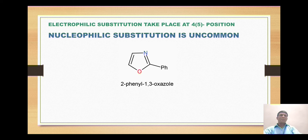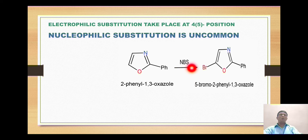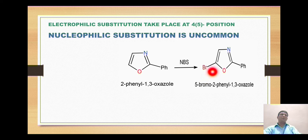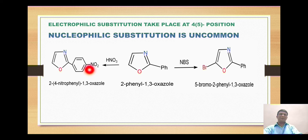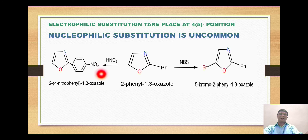When the oxazole derivative 2-phenyl oxazole is reacted with N-bromosuccinimide, bromination takes place. The bromine from N-bromosuccinimide attaches electrophilically at position number 5 to give 5-bromo-2-phenyl oxazole. Likewise, when an oxazole derivative is treated with nitric acid, the nitronium ion generated attaches to the phenyl ring — since the phenyl ring is a very good source of pi electrons — rather than at positions 4 or 5 on the oxazole, giving 2-(4-nitrophenyl) oxazole.